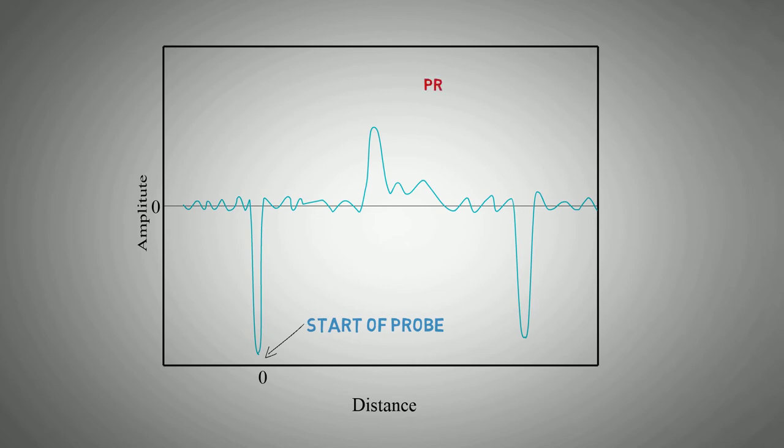The surface of the product will indicate as a positive amplitude that will be positioned depending where the surface of the product is in relation to the probe. Finally, the last negative amplitude will indicate the end of the probe where the reflections drop off.